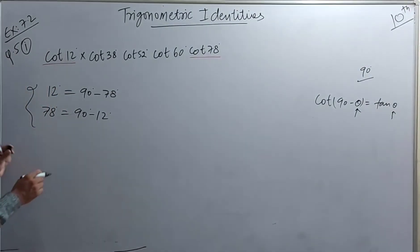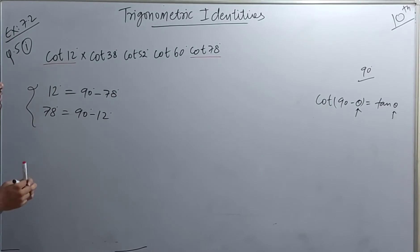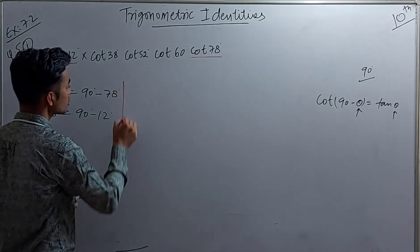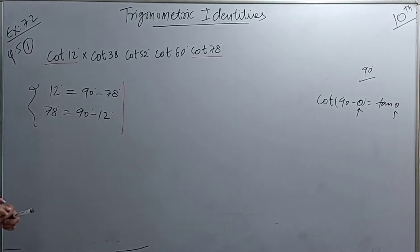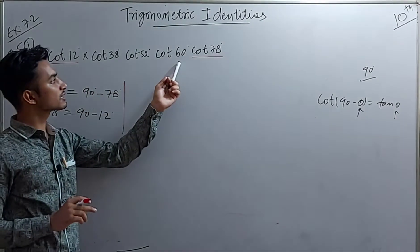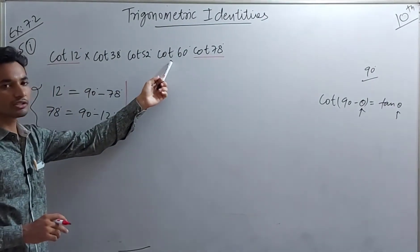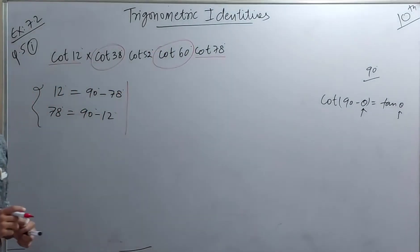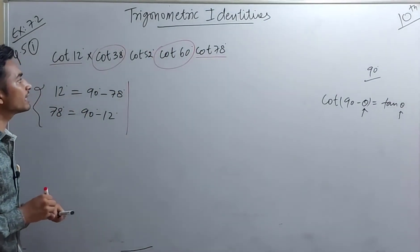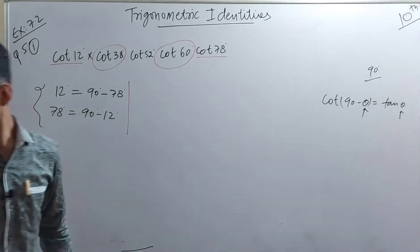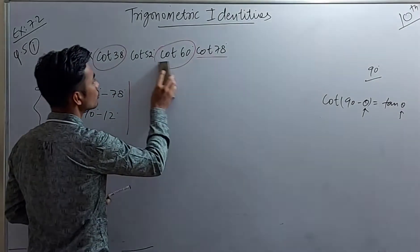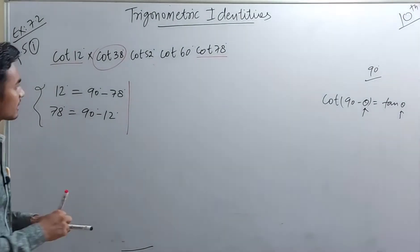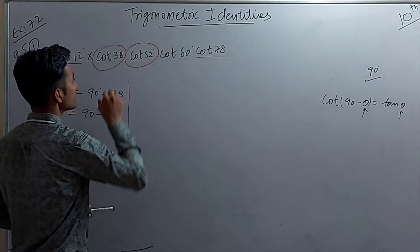Then we have cot 38°, cot 52°, and cot 60°. Similar to the 12° and 78° pair, let's check: 38° + 52° = 90°, but 38° + 60° does not equal 90°. So cot 38° and cot 52° form the complementary pair — not cot 60°.